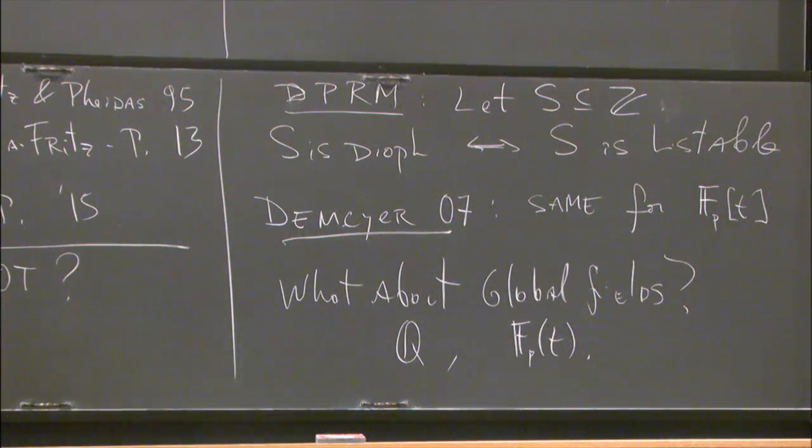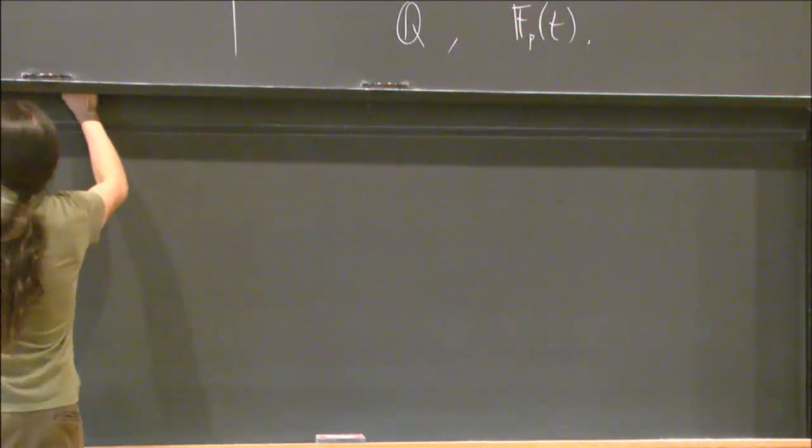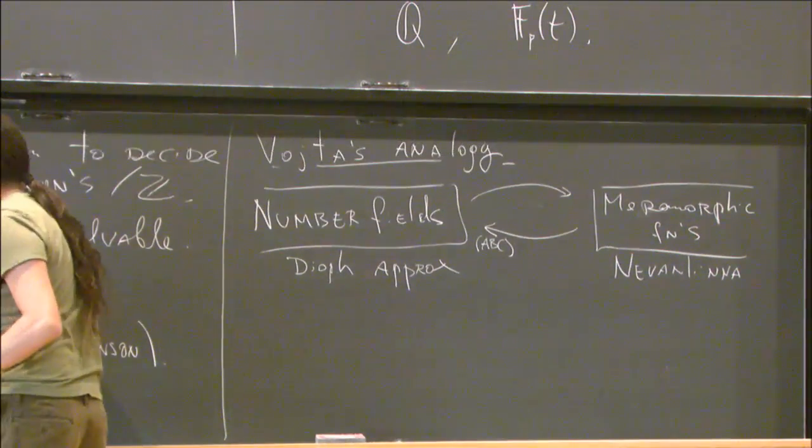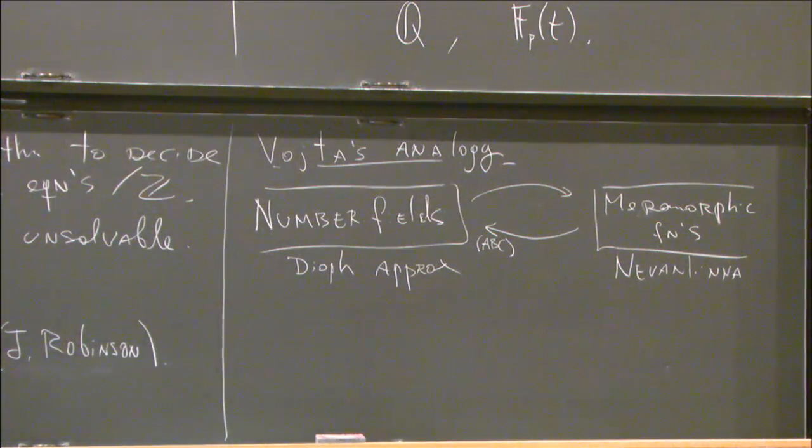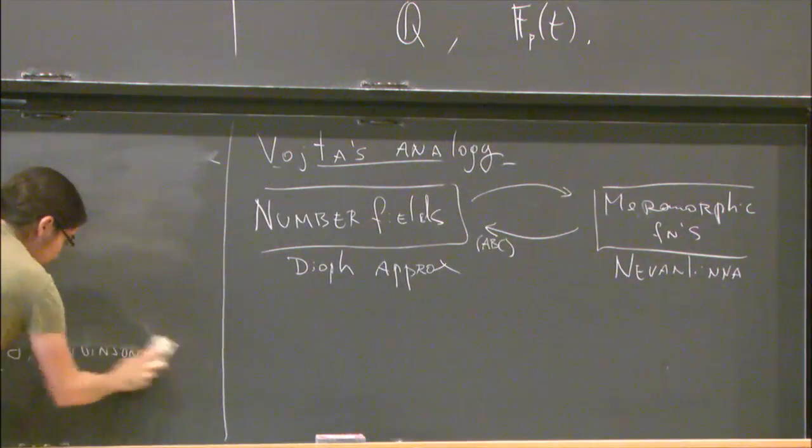For Fp(t), I will get to that point, because I need exactly that set for an example later. So what do we know here? For global fields themselves, we don't know much.